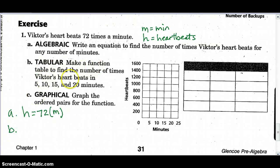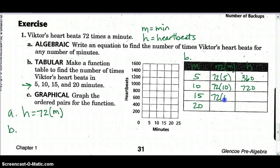B says to make a function table. We'll put B over here then. Here's my function table. So 72m is going to spit out heart beats. So I need to put in minutes. It says here to try it for 5, 10, 15, and 20 minutes. So when I plug in 72 times 5, I get 360. 72 times 10, 720. 72 times 15, 1080. 72 times 20, 1440.